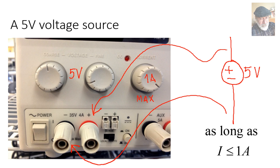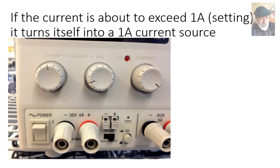A natural question is, what happens if the circuit tries to drain more than 1A out of this 5V source? Does it shut itself down? No, it does not. It does something radical. It becomes a 1A current source.